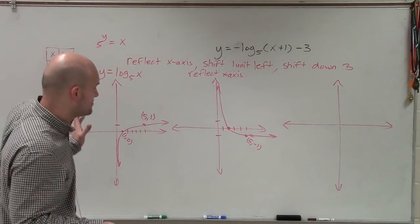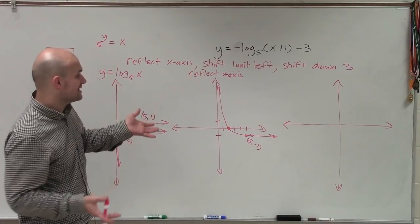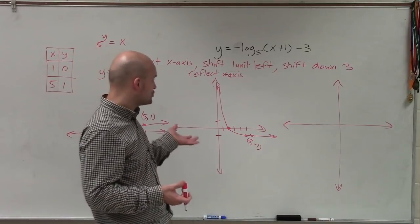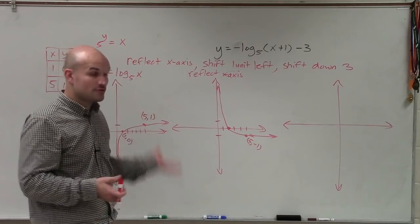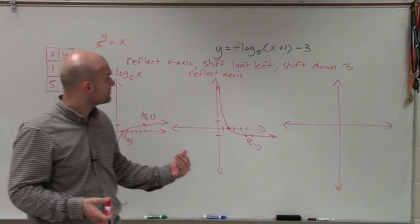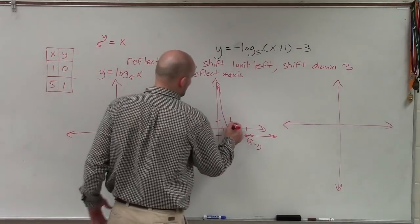So that's a reflection of my x-axis. But then there's two other transformations that need to happen. The next thing is I need to take that graph and I need to shift it now down 3 units. And I also need to shift that graph 1 unit to the left.